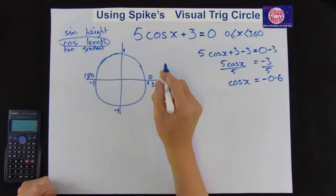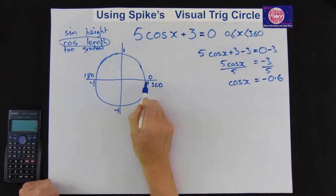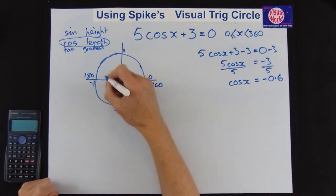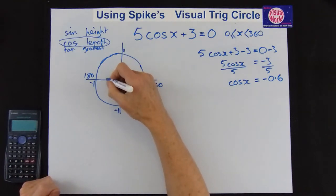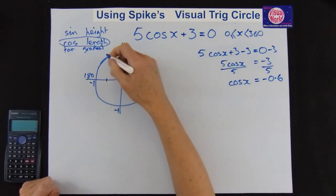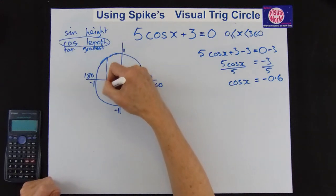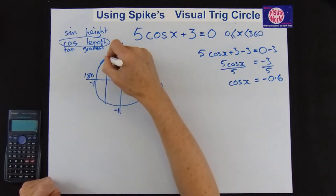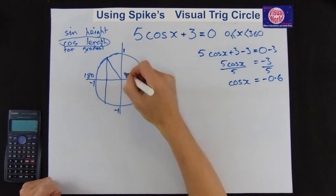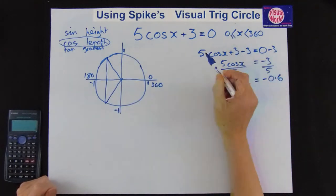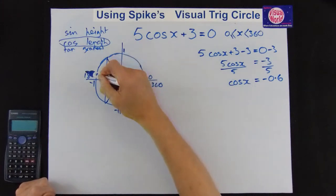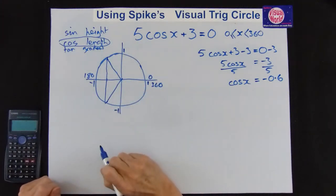So if we go along the length axis, and it's not positive 0.6, it's back 0.6. Now it's a diagram so it doesn't matter where exactly you draw it. But somewhere about there. And we draw a line through. So we can now see here two answers. Because we're only going between nothing and 360, so we're going around the circle once. So we've got two answers there.